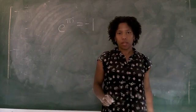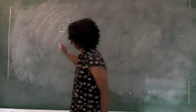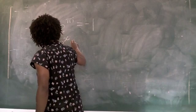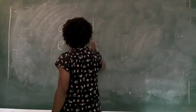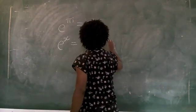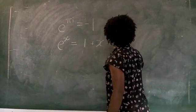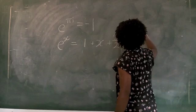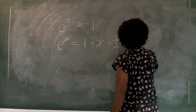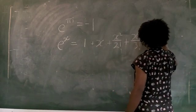Our first step was to prove that e to the x is equal to the power series 1 plus x plus x squared over 2 factorial plus x to the 3rd over 3 factorial plus n to infinity.